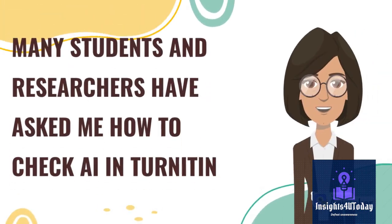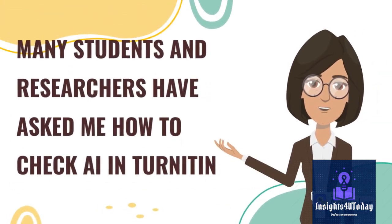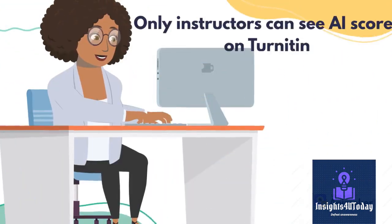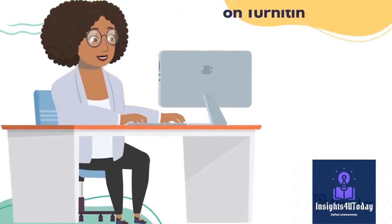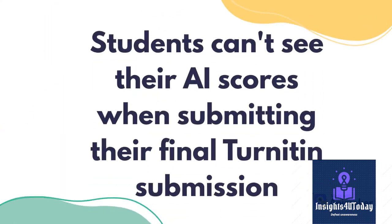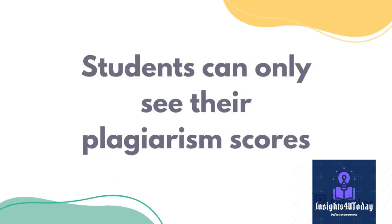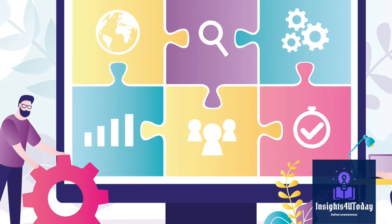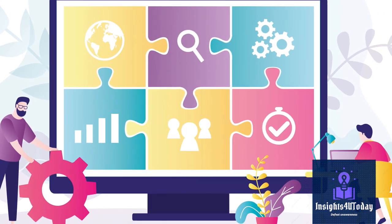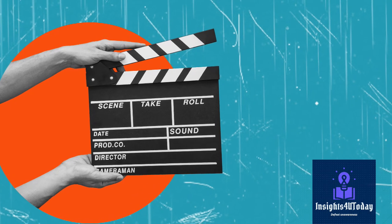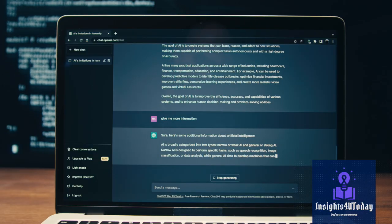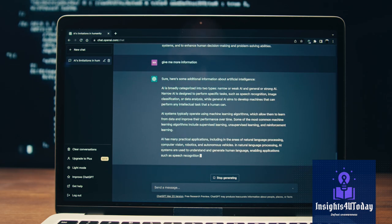Many students and researchers have asked me how to check AI in Turnitin. Turnitin makes it difficult for students to use their AI detectors easily, because only instructors can see AI scores on Turnitin. Students can't see their AI scores when submitting their final papers — they can only see their plagiarism scores. If you do not know the difference between a plagiarism check on Turnitin and an AI check, see my video titled 'Does Turnitin detect ChatGPT when used to remove plagiarism and for grammar corrections' — I explained the difference there.